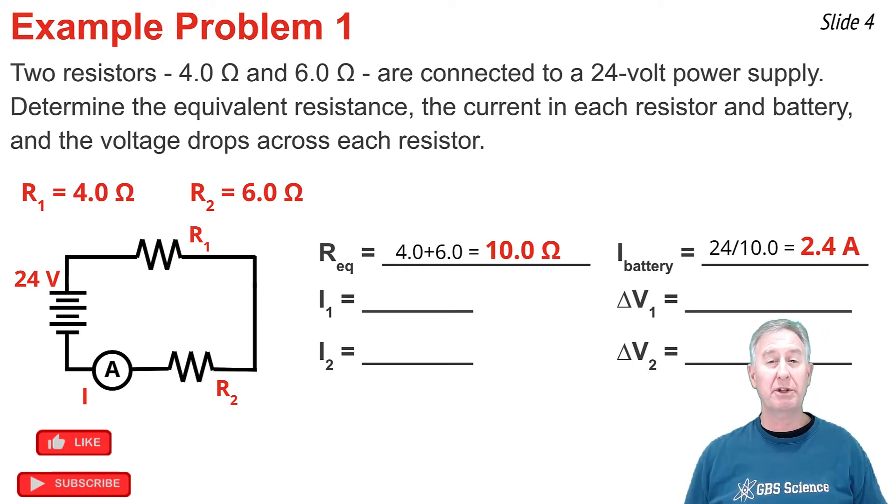Now that I know the current in the battery, and I know that the current is everywhere the same, then I also know what I1 and I2 are. They're also 2.4 amps. Now that I know the current in each of the resistors, I can use ΔV = IR to determine the voltage drop across each resistor. For resistor number one, that's 2.4 times 4. That's 9.6 volts.